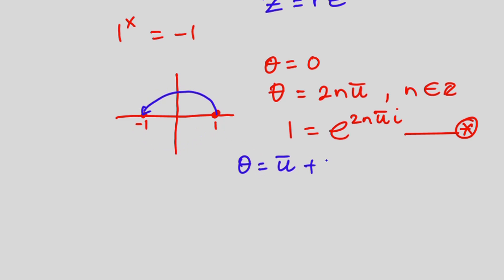With this one we just have to add 2n, but now it shouldn't be n, let's change the variable, let's call it 2k pi because it's not necessary that this k will be equal to this n.